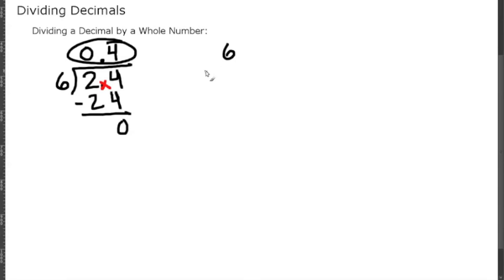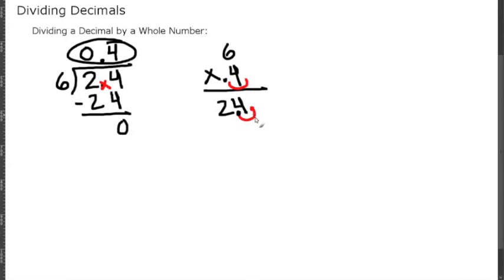Remember, a good way to check your division is by multiplication. So let's do 6 times 0.4 — do we get the same answer, 2.4? Six times 4 is 24, and we have one decimal place, so moving it over gives us 2.4. Now let's see how to divide a decimal by a whole number one more time.